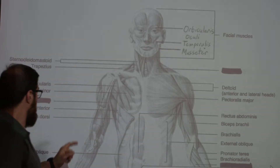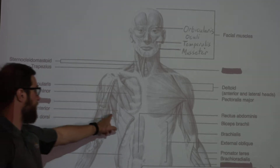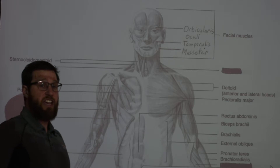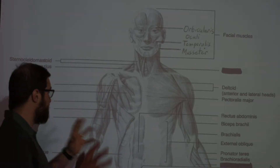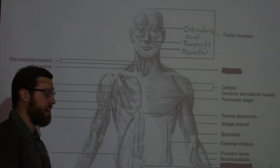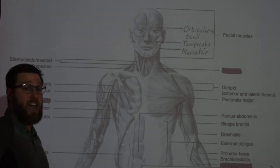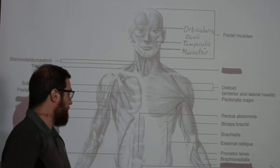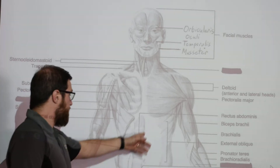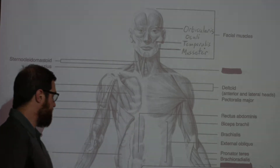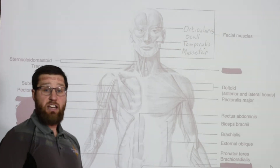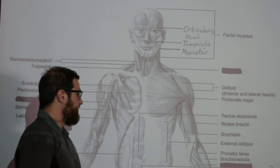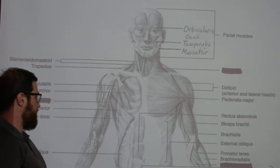The serratus anterior is really involved in stabilizing your scapula. Whenever you do a back movement or shoulder rotation, it keeps your scapula from moving around your back too much. We don't generally see it on our bodies, but it is important for scapular stability during shoulder rotation. Your rectus abdominis — your abs — has the linea alba running down the middle and four compartments generally, and of course it is involved in spinal flexion — when you curl over, you are using your rectus abdominis.